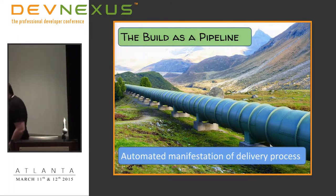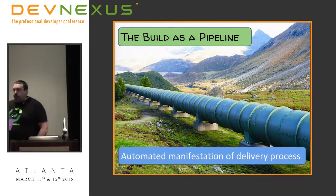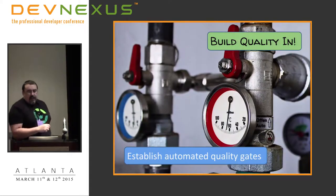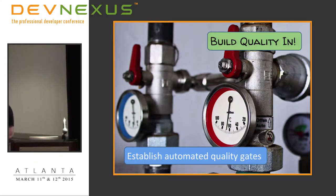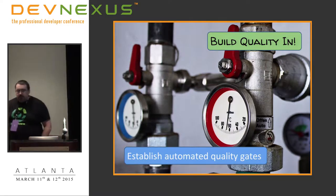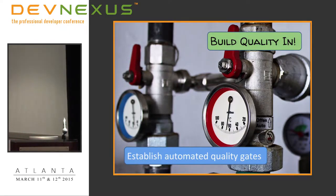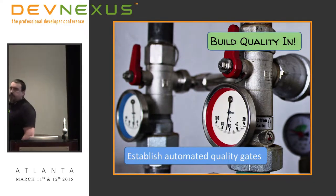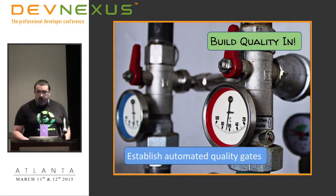A good way to visualize a continuous delivery pipeline is as an actual pipeline — we're moving changes to our application through it on their way into production. Like any pipeline, we're going to have valves and gauges to let us know whether everything is actually flowing properly. We want to build quality into our lifecycle such that if we have a commit that is not high quality — something we don't actually want to go to production — we can stop it in the pipeline at that point and not let it go forward. So we establish automated quality gates to measure this.